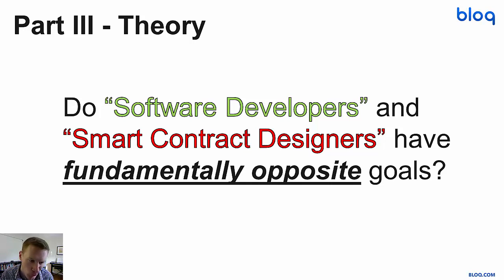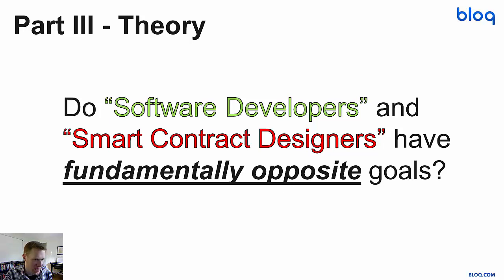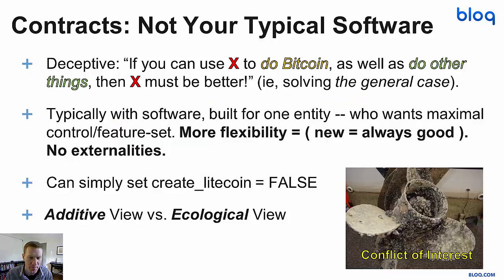Okay, part three. Do software developers and smart contract designers have fundamentally opposite goals? I'm going to argue that the answer is yes. It's pretty interesting, isn't it? How could this be the case? How could they have opposite goals? What are the goals that I'm talking about that are supposedly opposite?